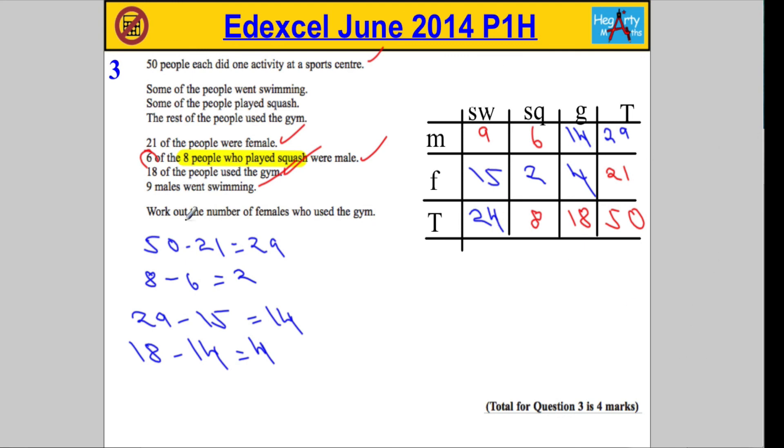Now let's see if we can get the answer here. We were asked to work out the number of females who use the gym. And lo and behold, if we go across to our diagram, our two-way table, we can see we've got four females using the gym.